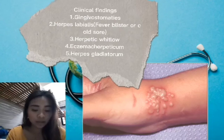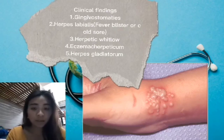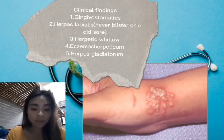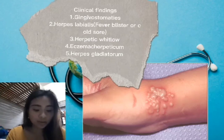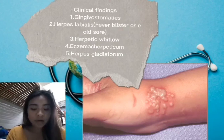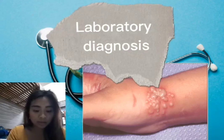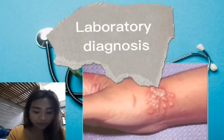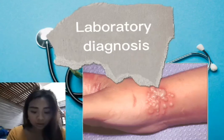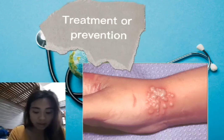Fourth is eczema herpeticum, HSV infection occurring in children with eczema, showing that HSV can be an opportunistic pathogen causing superimposed infection. Fifth is herpes gladiatorum, HSV infection of the body usually acquired during wrestling or rugby. Laboratory diagnosis is based mainly on clinical presentation; diagnosis can also be made by histopathologic changes and using the Tzanck smear to demonstrate characteristic inclusion bodies known as Cowdry type A inclusions. The recommended treatment is acyclovir.